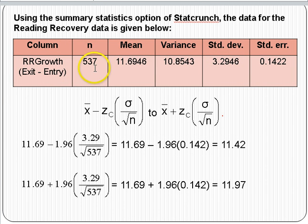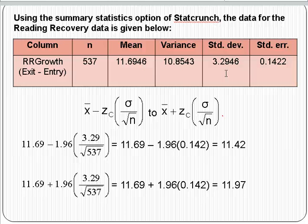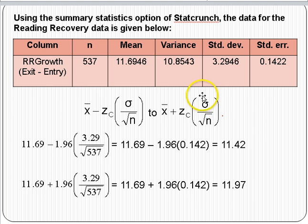The sample size is 537 and the sample mean for these 537 students is about 11.69. Now here's an assumption we're going to make — for now we'll make it, and later we'll explain that it's still correct, just something slightly different we have to do, which we'll explore in the next sessions. We're going to assume that the standard deviation of this sample is approximately equal to the standard deviation of growth scores for all students — that is, the sample standard deviation equals the population standard deviation — and we'll use that in the formula.